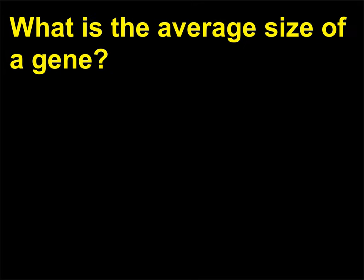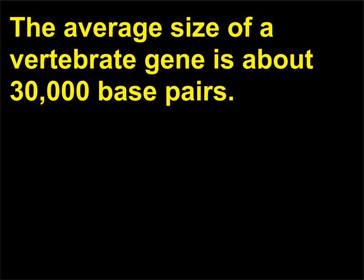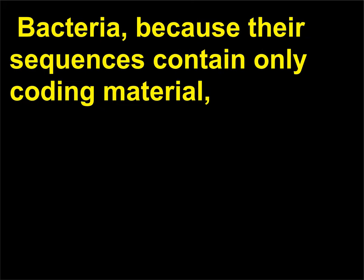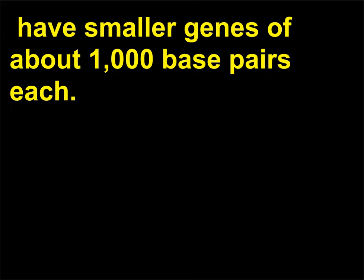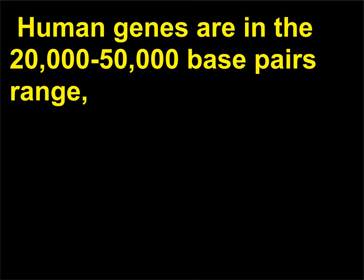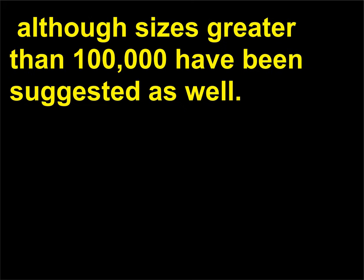What is the average size of a gene? The average size of a vertebrate gene is about 30,000 base pairs. Bacteria, because their sequences contain only coding material, have smaller genes of about 1,000 base pairs each. Human genes are in the 20,000 to 50,000 base pairs range, although sizes greater than 100,000 have been suggested as well.